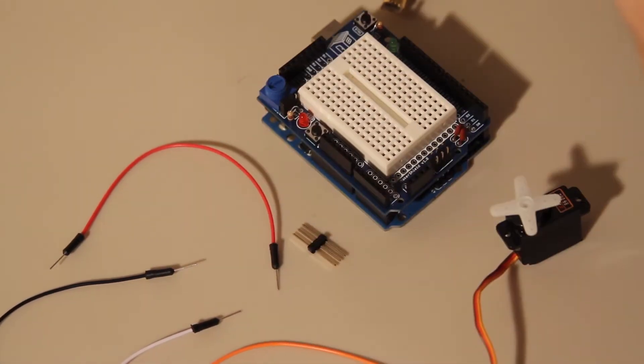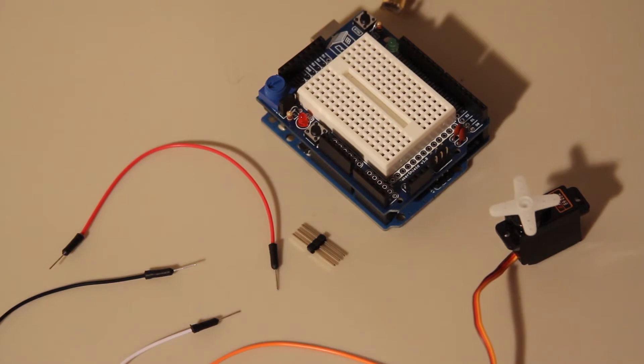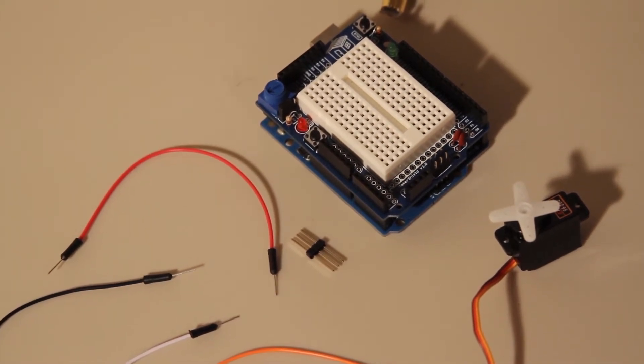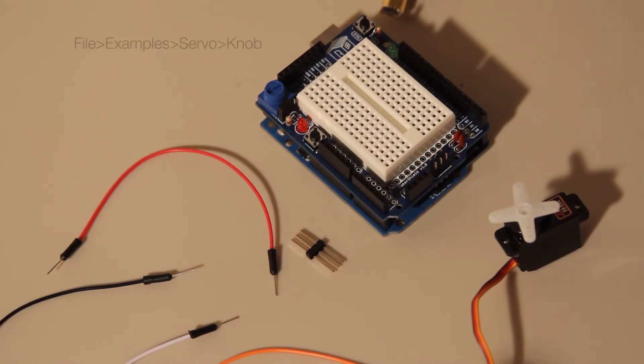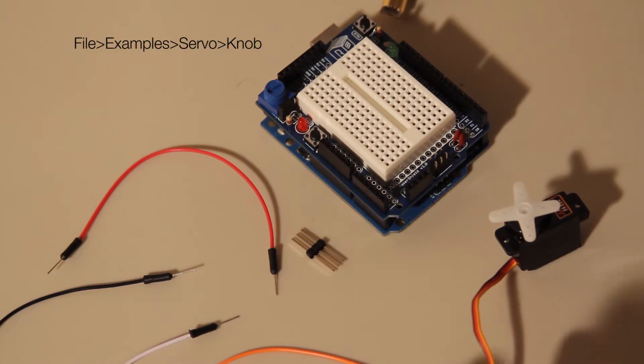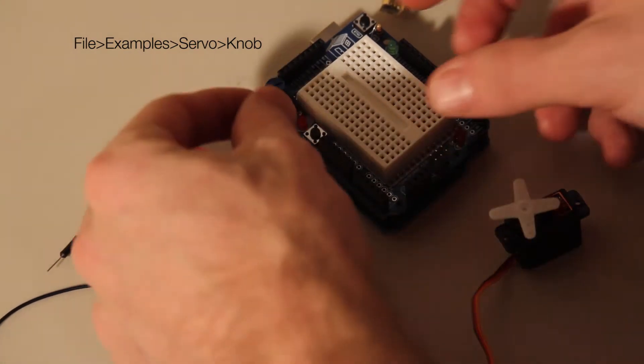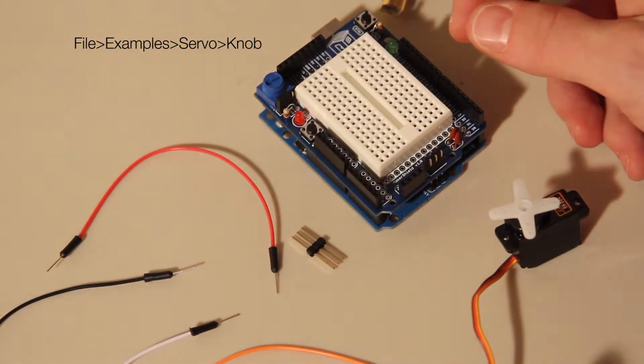And then we're going to use the servo library example that's on Arduino already. So all you'll have to do for that is go to File, Examples, go down to Servo, and then choose Knob. That's the sketch. You'll upload that and it's going to give us the ability to move the servo with a potentiometer.